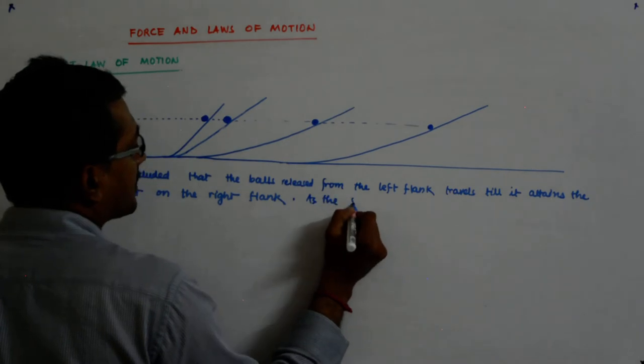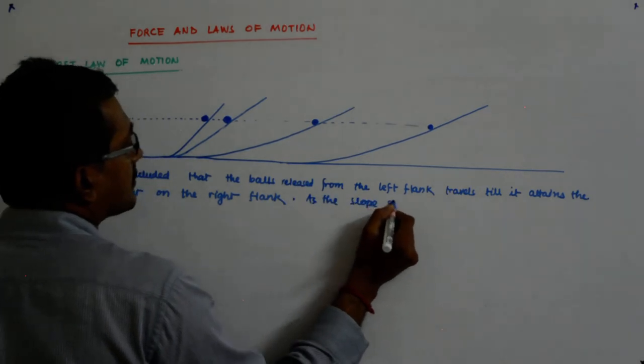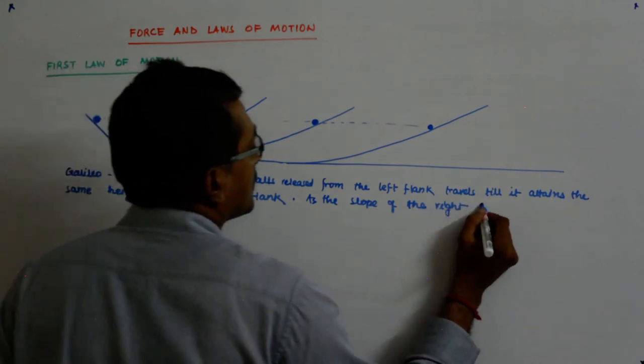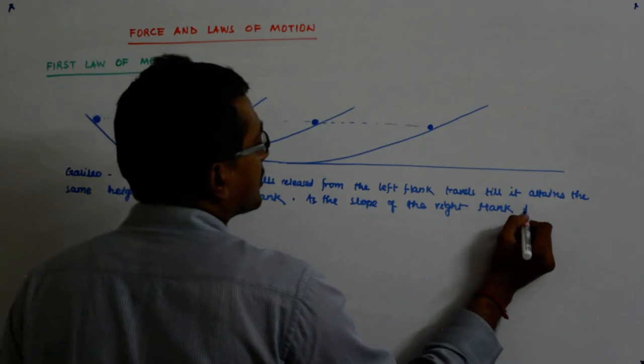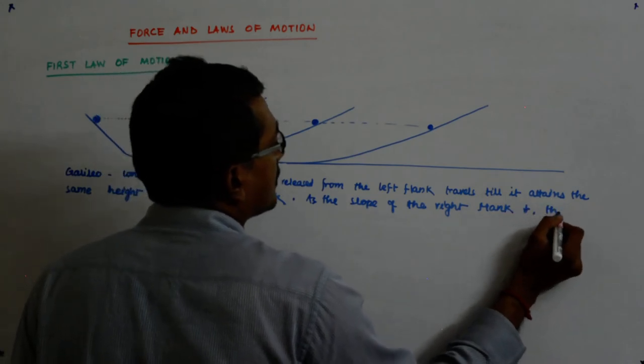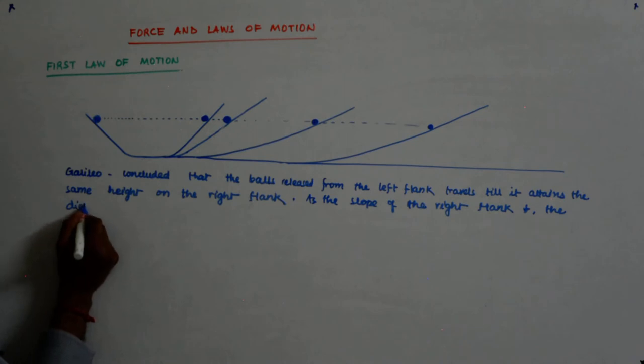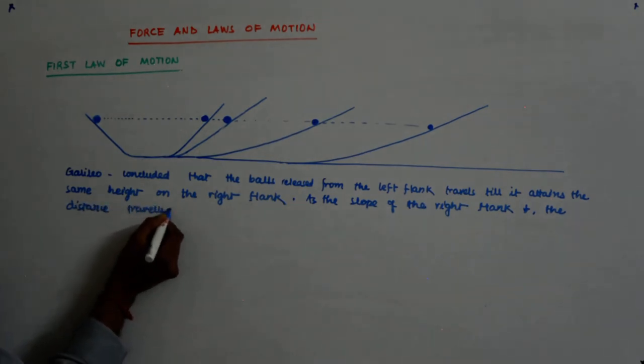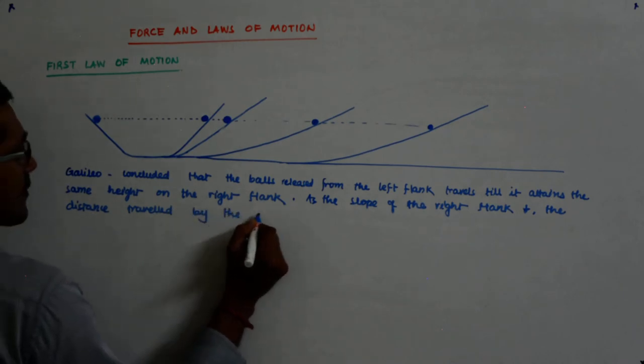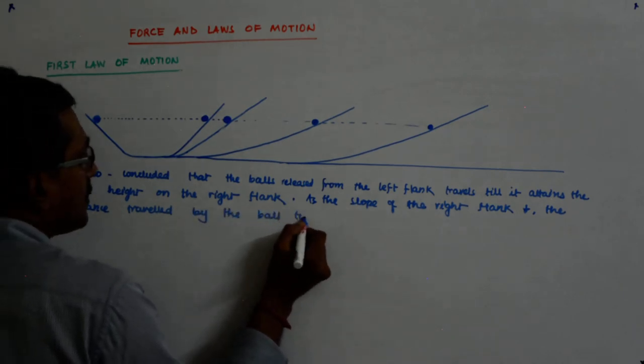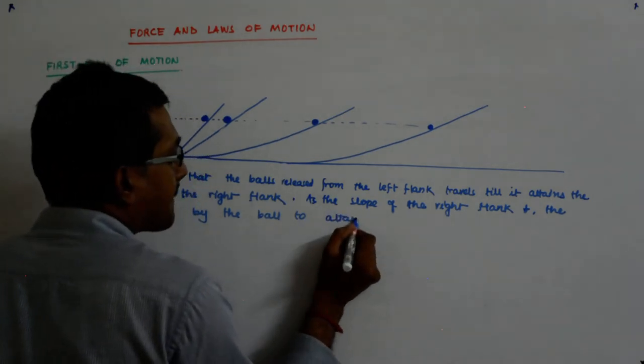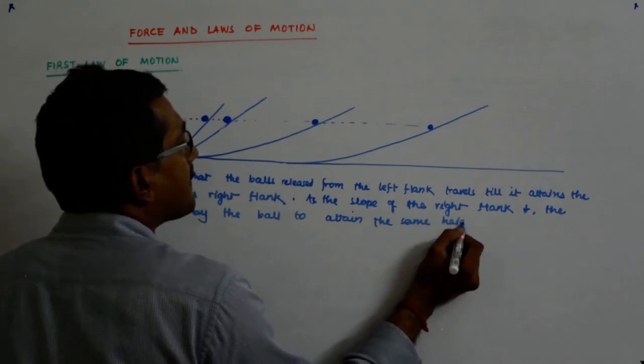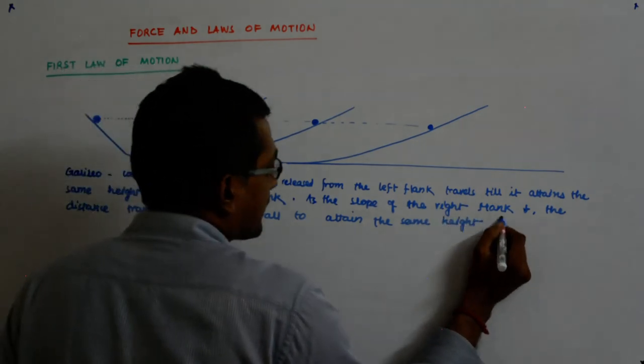As the slope of the right flank decreased, the distance travelled by the ball to attain the same height increased.